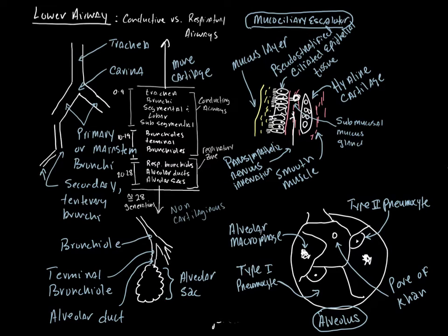The mucociliary escalator is not present within the alveoli. You just have one layer — one cell length — a flat, simple, non-stratified epithelia. This thin one-layer wall exists to optimize the diffusion of gases across it.